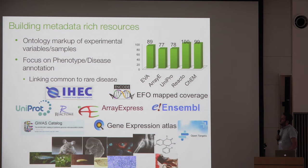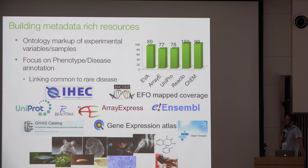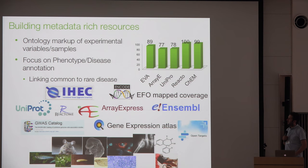This shows some of the resources where we're heavily focused on ontology markup. Most of it is focused around experimental variables — describing what an experiment is about, describing associated samples — with an even more specific focus on phenotype and disease mappings. We have various projects around linking common to rare disease and linking disease to phenotype ontologies. We're getting up to complete coverage for some of these resources, mapping data to the set of public open ontologies.